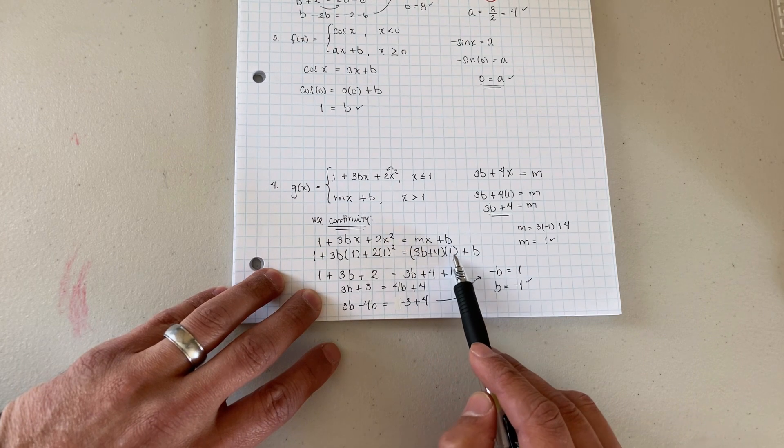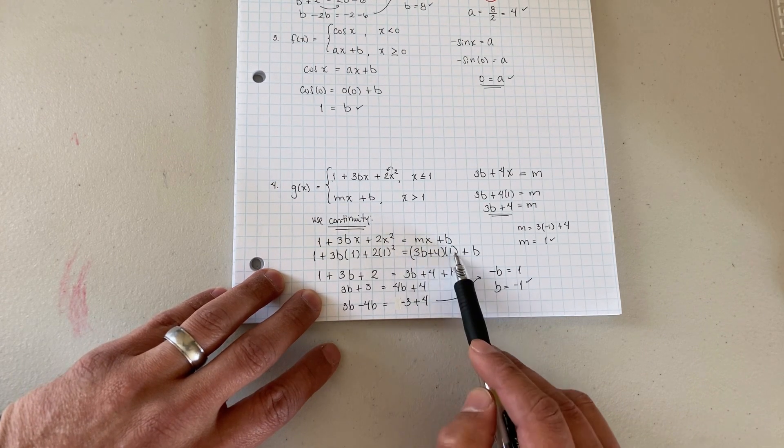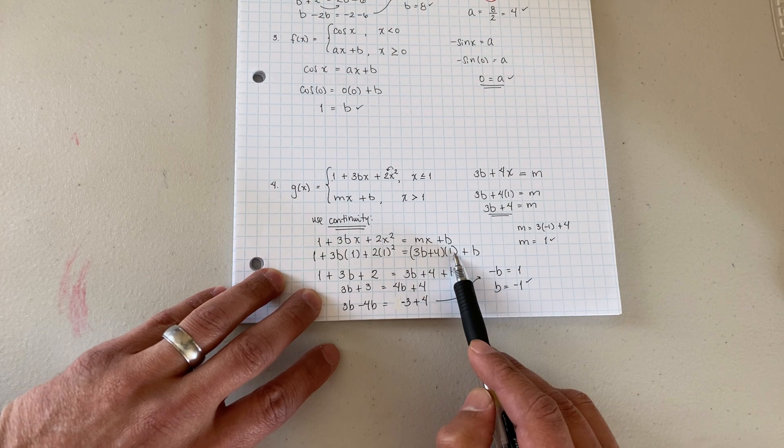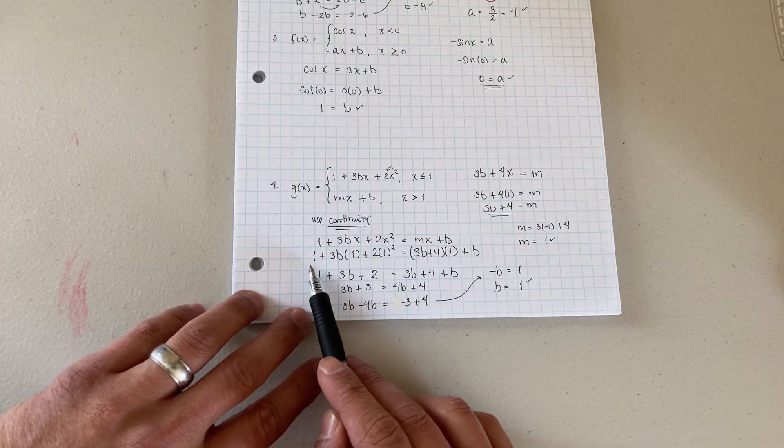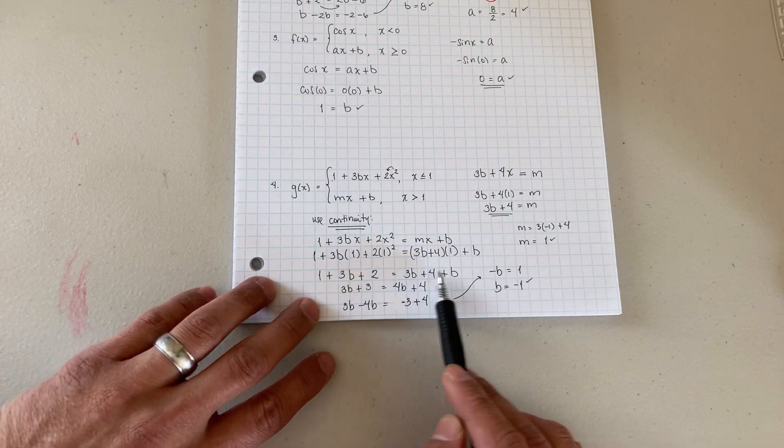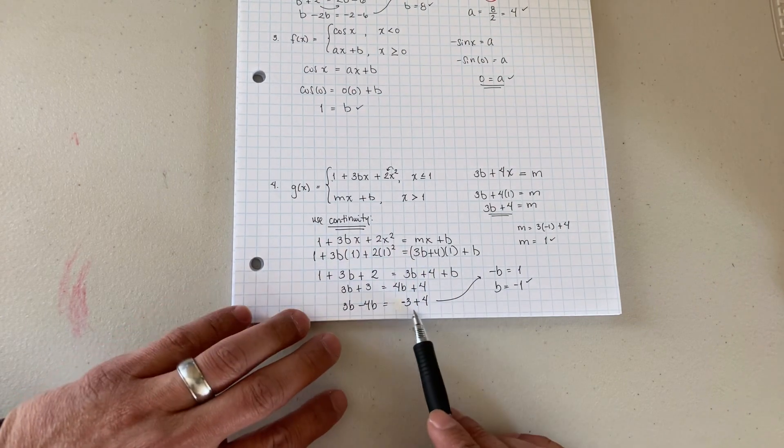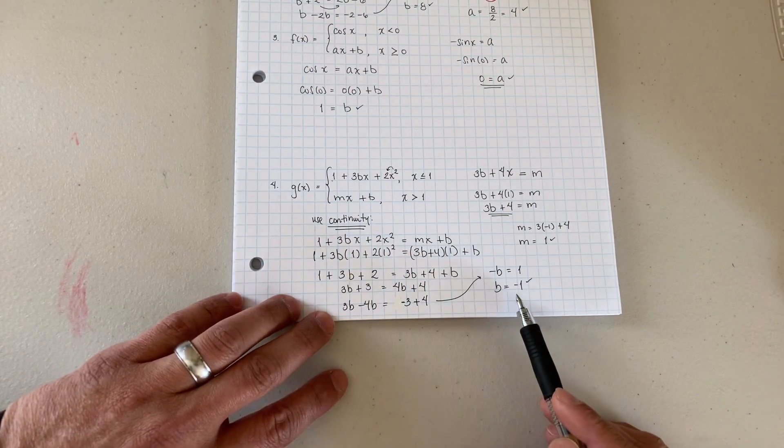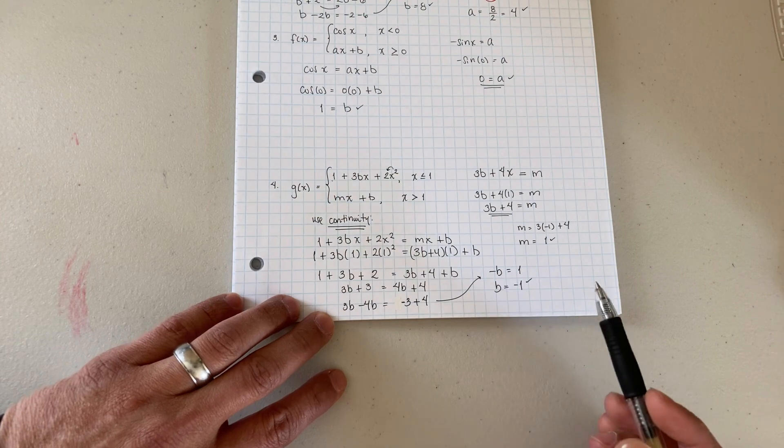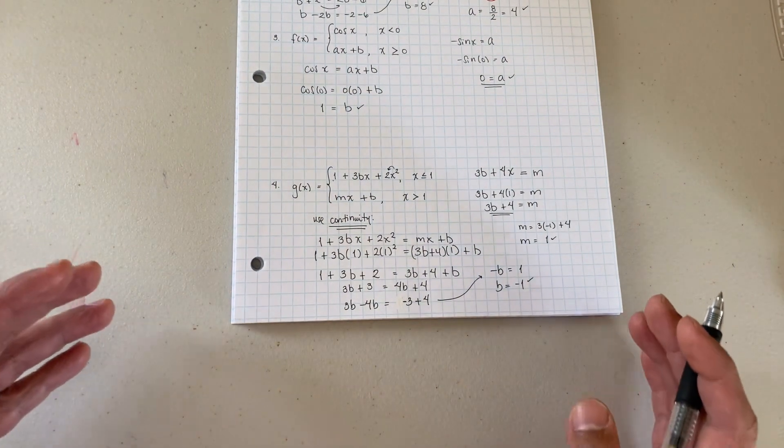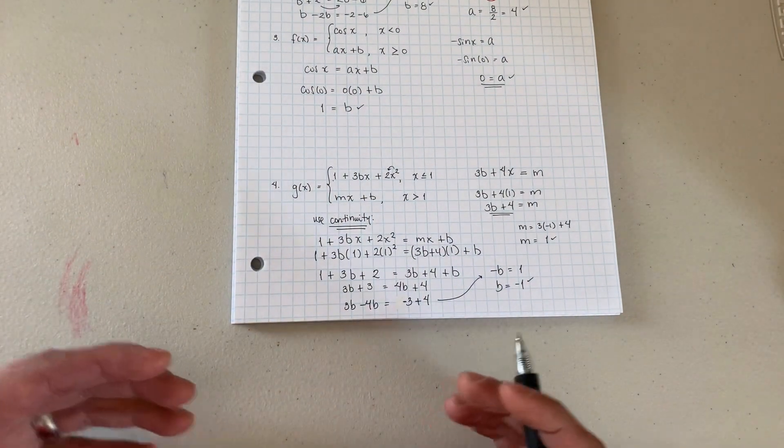And then we end up with 1 plus 3b plus 2, and then from here just a lot of algebra that we can go ahead and do. We end up with b is equal to negative 1. So that's one thing I want you guys to see, differentiability, how to set it up, and then you go back and use continuity to go ahead and solve it.